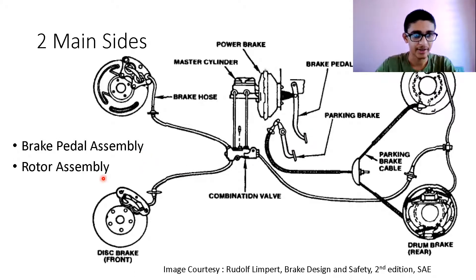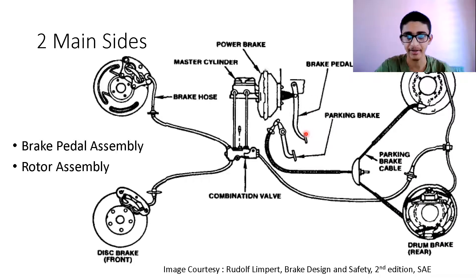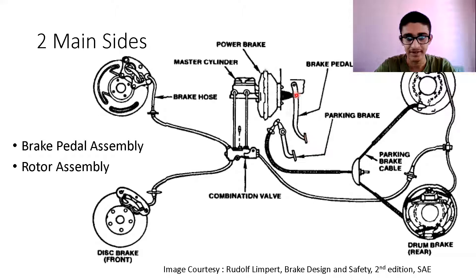I'll explain brake pedal and rotors in subsequent slides, but this is the overall picture of how the braking system looks. Here we have the brake pedal where the driver applies force. This is the hinge from where the brake pedal is pinned, and we can see that a bias is made for mechanical advantage. We apply force here and the opposite force is applied to the fluid in the master cylinder. This distance is larger so we need less force, and since this distance is smaller, the equivalent force applied will be much larger.